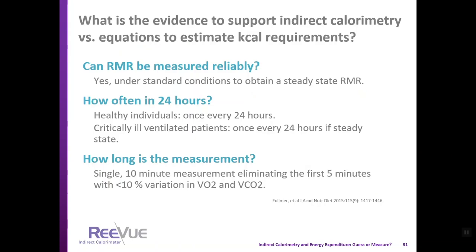Is there evidence to support using indirect calorimetry instead of equations? Yes — resting metabolic rate can be measured reliably under standard conditions to obtain a steady-state RMR. For healthy individuals, it can be measured once in a 24-hour period, as can critically ill ventilated patients if steady state is achieved. A single 10-minute measurement is adequate as long as the first 5 minutes are eliminated and VO2 and VCO2 are within 10% variation. For more information, see Fulmer and colleagues in the Journal of the Academy of Nutrition and Dietetics, 2015.